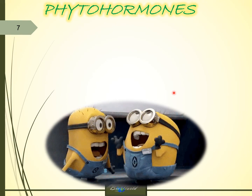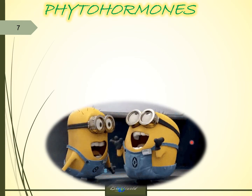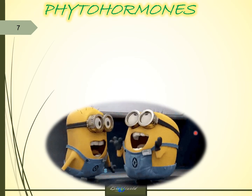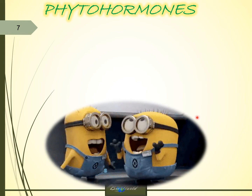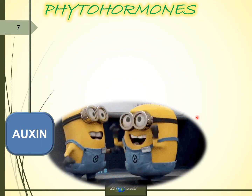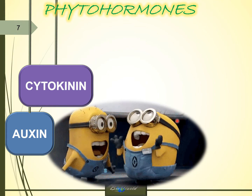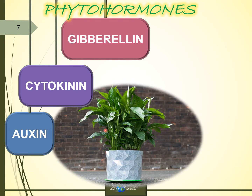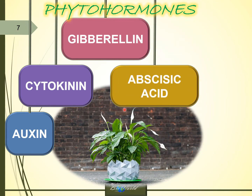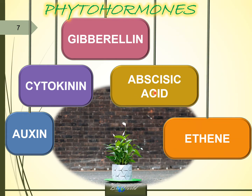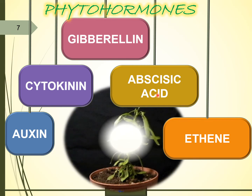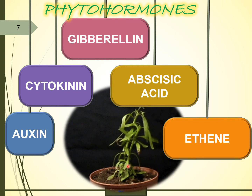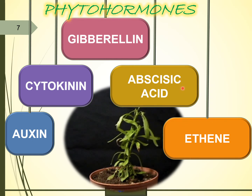Now let's look at the names of these hormones. In our syllabus we discuss five. The first is auxin, the second is cytokinin, and the third is gibberellin. These three hormones keep the plant young, vibrant and alive. The other two hormones are abscisic acid and ethylene. These two hormones actually age the plant. So when a plant is going to bear fruit or die, it will have higher concentrations of abscisic acid and ethylene.